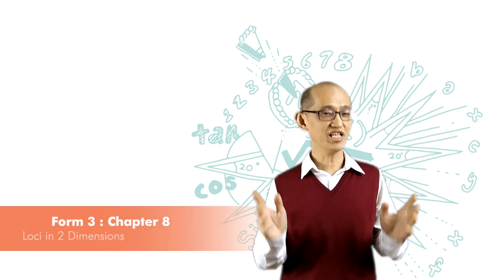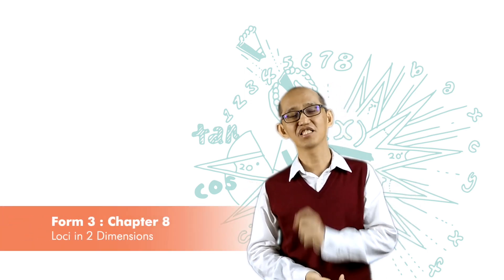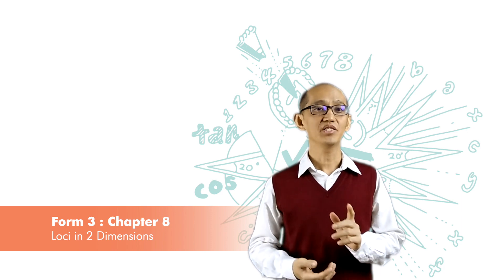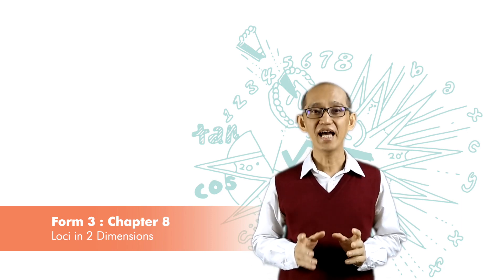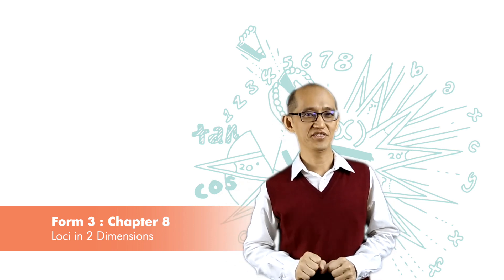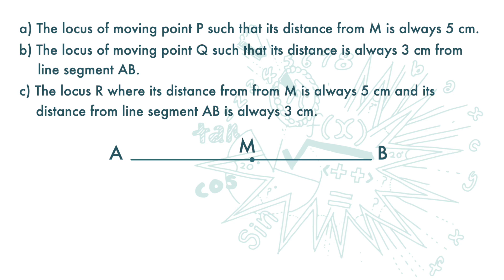We have looked at several loci that obey a certain condition. Today we are going to look at loci that satisfy two or more conditions. Here we have a line segment AB of 12 centimeters and its midpoint M.